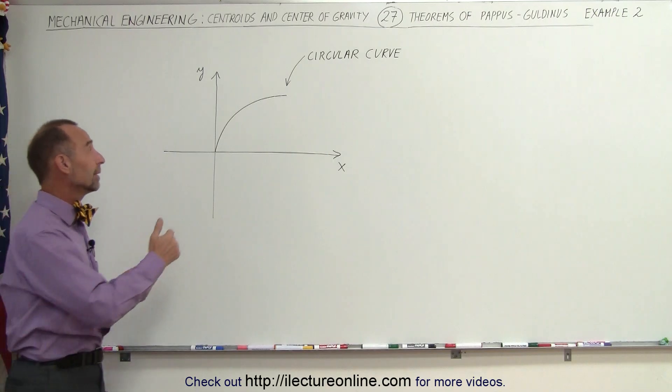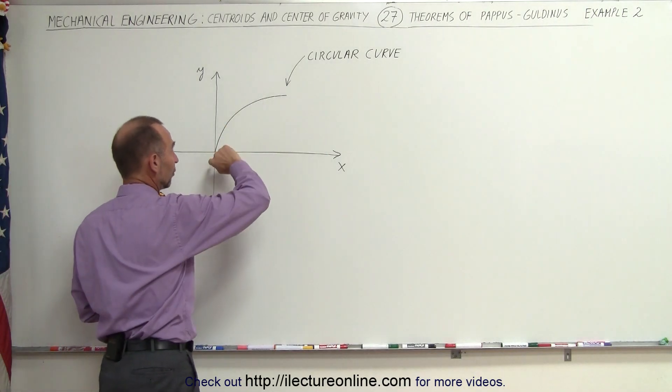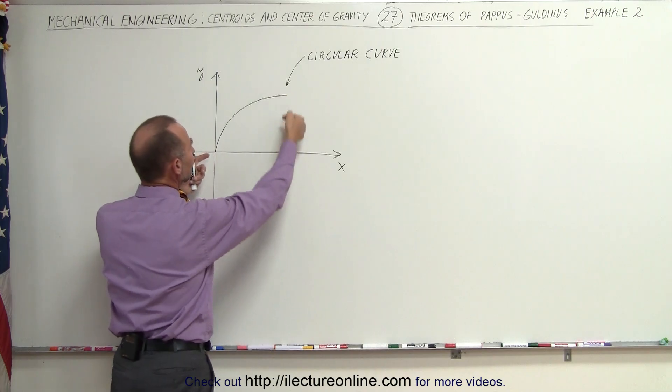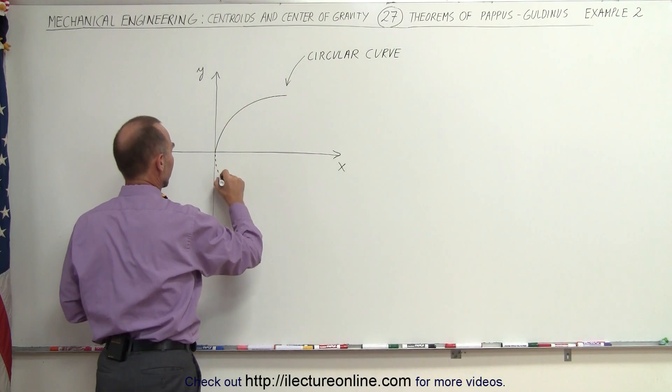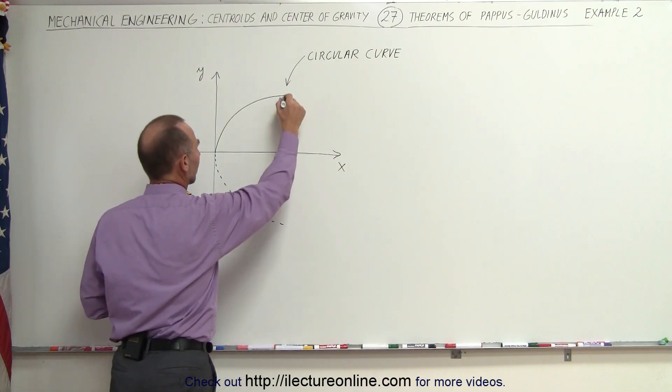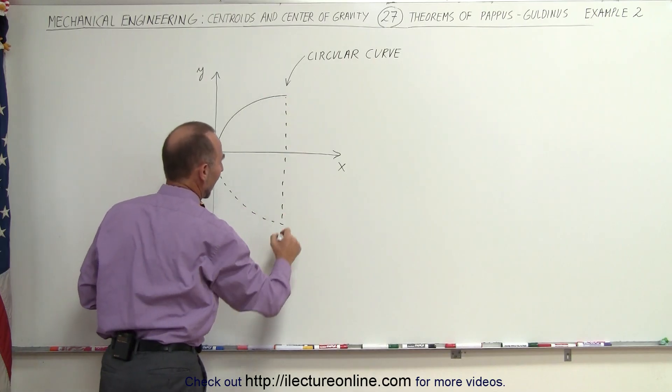What we're trying to do here is we're taking a circular curve, there's one quarter of a circle, and we're going to rotate it about the x-axis. When we do that, we form, let's see what that looks like, well we form like a semi-sphere, a half a sphere.